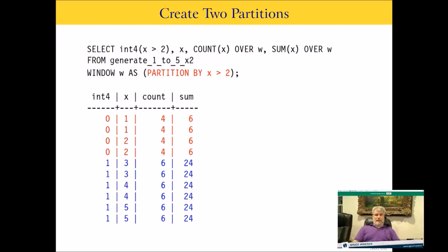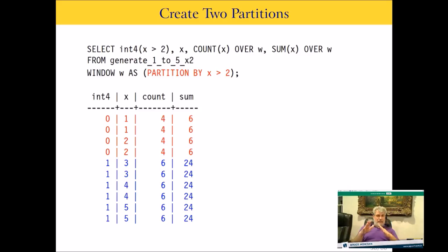Here's a more concrete partition example. I've created two partitions using PARTITION BY (X > 2): one partition for all rows where X is less than or equal to 2, and one for rows where X is greater than 2. The count of the first partition is 4, and the second is 6. Without ORDER BY, every current row includes the whole partition, so the sum is always 6 in the first batch and 24 in the second.